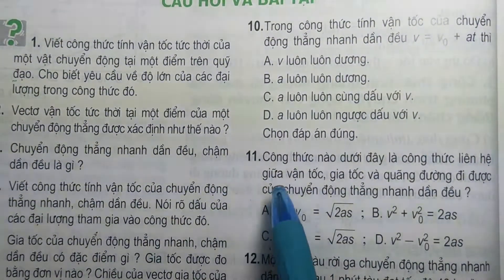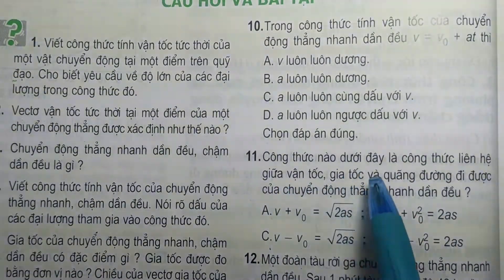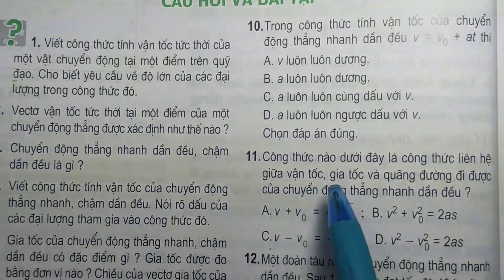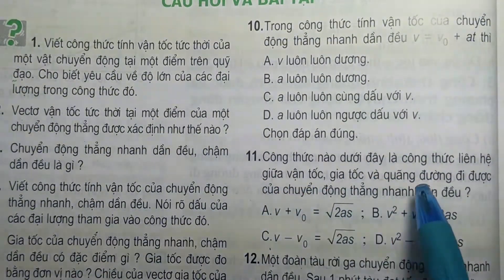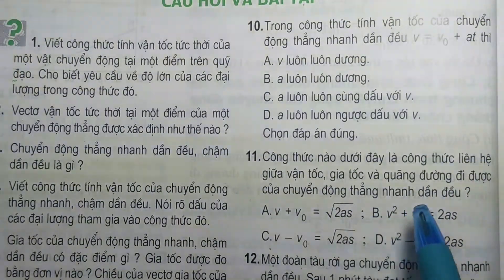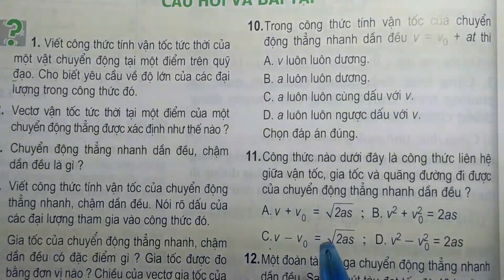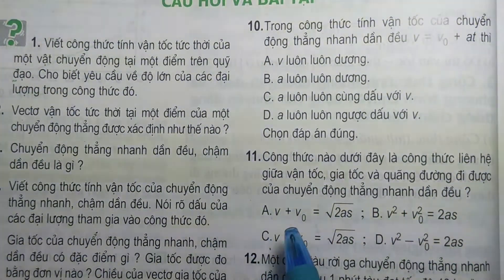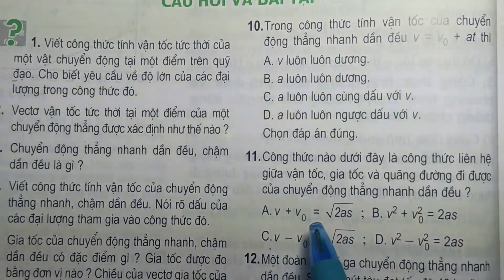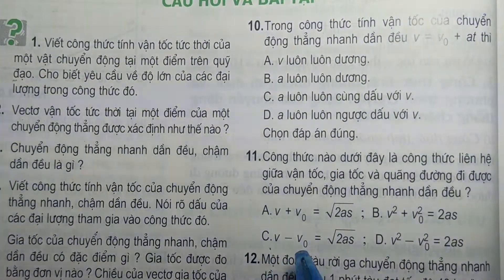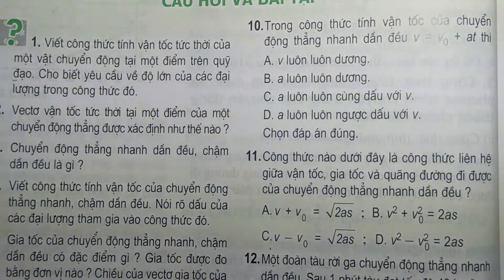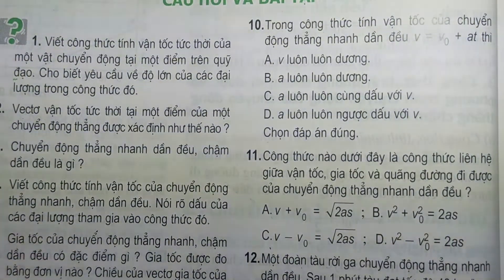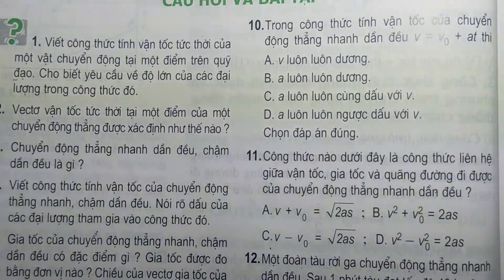Câu số 11: Công thức nào dưới đây là công thức liên hệ giữa vận tốc, gia tốc và quãng đường đi được của chuyển động thẳng nhanh dần điều? Câu A có V cộng V0 — chúng ta không có học công thức nào dạng V cộng V0 hết. Vậy thầy ghi lại 6 công thức để các con xem.